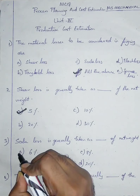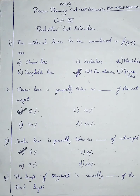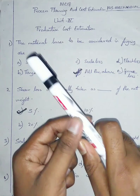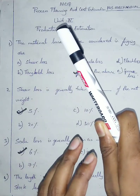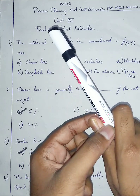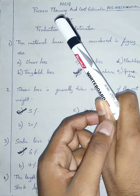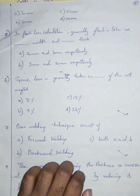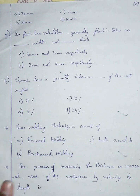Question number four: the length of the tongue hold is usually dash of the stock length. We hold the workpiece with a tongue hold, but even in the holding area you get losses — the part being held is not heated, so it is considered a loss. Options: A is 20 mm, B is 30 mm, C is 5 mm, D is 10 mm. Option A, 20 mm, is the right answer.